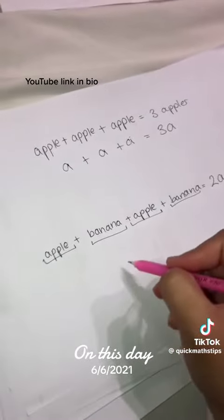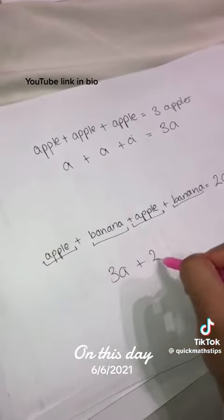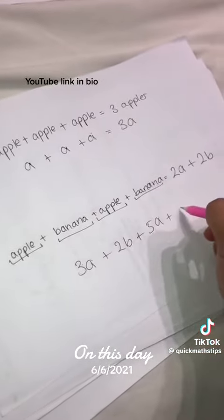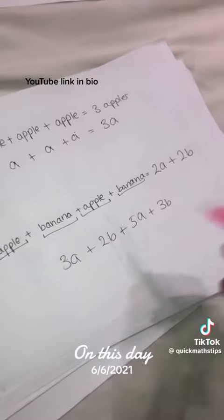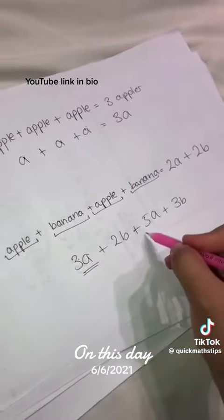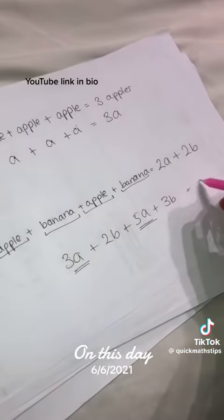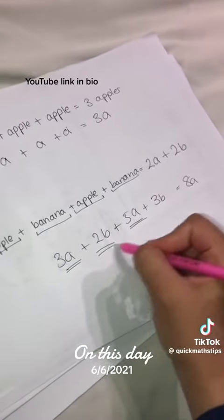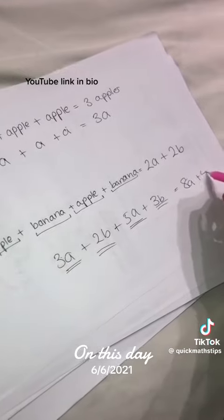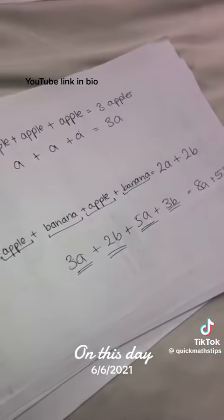So now, the same way, if I had 3A plus 2B plus 5A plus 3B — my A's, so my apples, will group together: 3A plus 5A will give me 8A. And 2B plus 3B will group together and give me plus 5B. That's how like terms work.